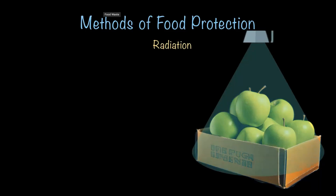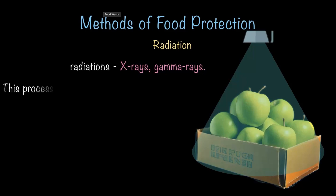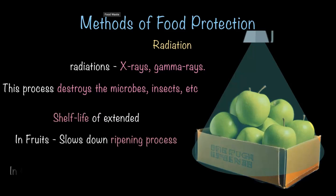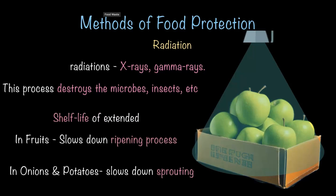So what exactly is radiation? Radiations are wave-like X-rays and gamma rays. You've probably heard of X-rays in hospitals — well, these same types of waves can also be used in food protection. Here is how it works: radiation destroys microbes, insects, and other harmful organisms present in the food.